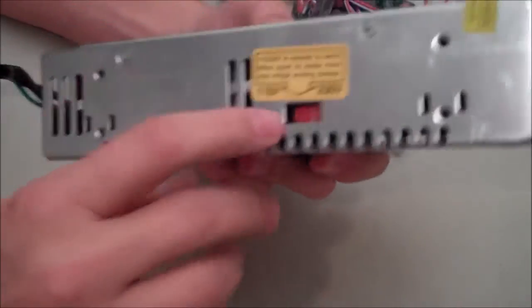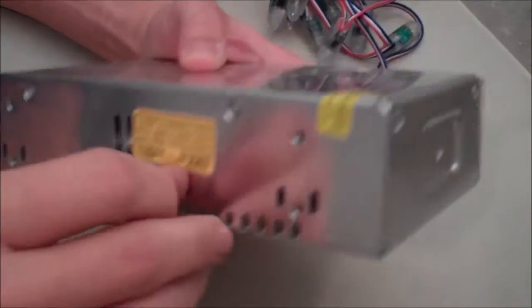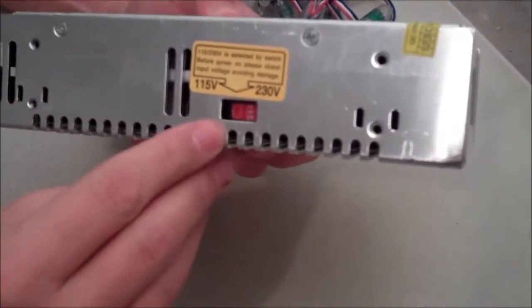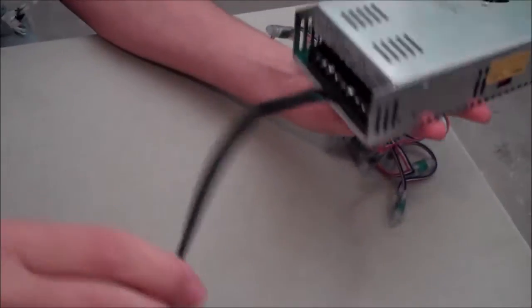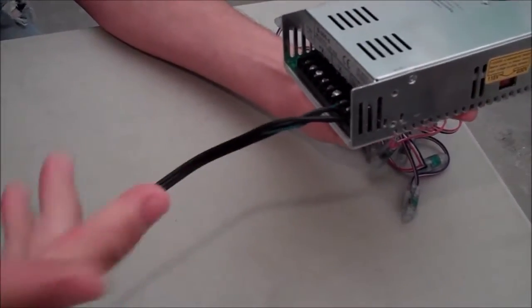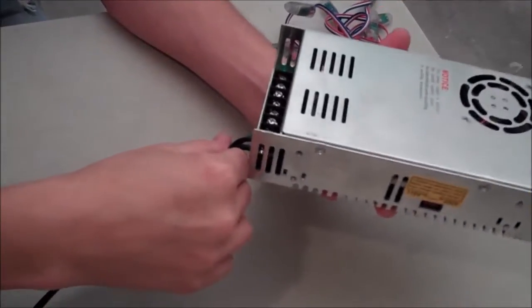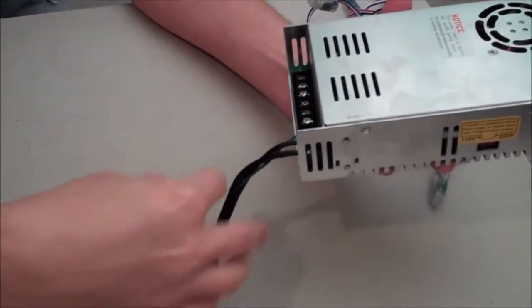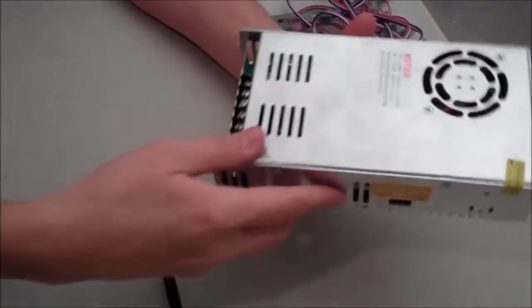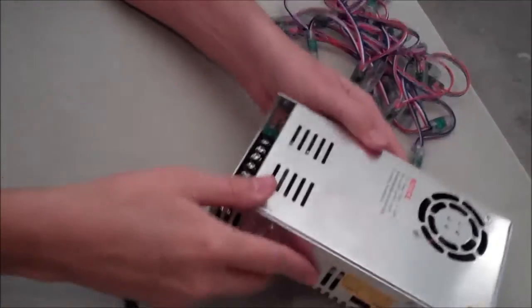Now before we do anything with the power supply, when you get it in, it's going to say on it 230, I guarantee you, and it's going to be switched to 230. So you want to switch it over to 115. And then it's not going to come with a power cord. These power cords are just PC power supply power cords. I got them for like a dollar at a local PC repair shop, probably order them off of Mono Price pretty cheap too. Just snip the end off of it, strip it back, put it in where it needs to go, and you're all set and ready to go.